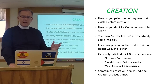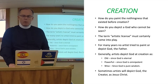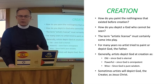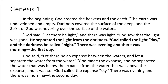Let's go to the beginning of the Bible. I encourage you to read along in your Bibles. Genesis chapter 1, verse 1: "In the beginning, God created the heavens and the earth. The earth was undeveloped and empty. Darkness covered the surface of the deep, and the Spirit of God was hovering over the surface of the waters. God said, 'Let there be light,' and there was light. God saw that the light was good. He separated the light from the darkness. God called the light day, and the darkness he called night. There was evening, and there was morning — the first day. God said, 'Let there be an expanse between the waters, and let it separate the water from the water.' God made the expanse and separated the water below from the water above the expanse, and it was so. God called the expanse sky. There was evening, and there was morning — the second day."